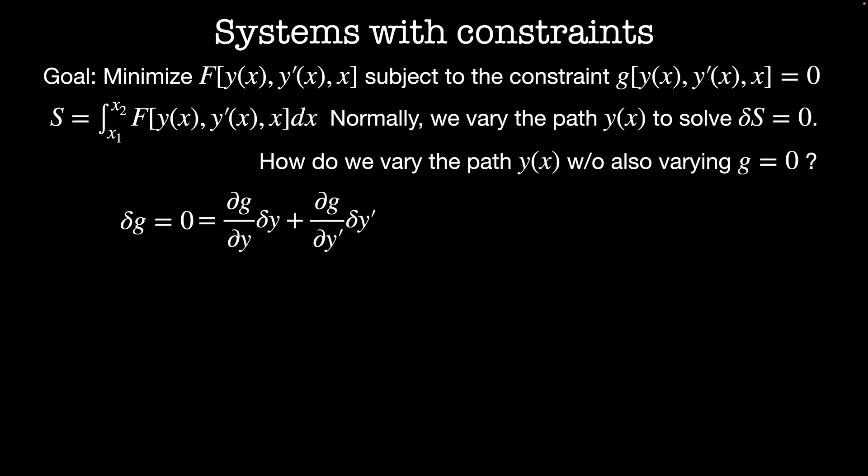Using the chain rule delta g is equal to dg by dy times delta y plus dg by dy prime times delta y prime. We turn this into a differential equation by integrating by parts and we get our familiar Euler Lagrange equation dg by dy is equal to d by dx dg by dy prime. That means that if delta g is to remain stationary when we vary y of x, then y of x must simultaneously satisfy the Euler Lagrange equation for g as well as it does for the original functional f.